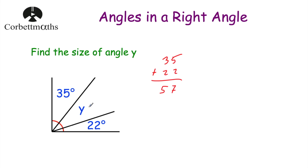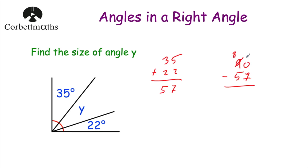So if we take 57 away from 90 that'll tell us what's left for y. 0 take away 7 we can't do, so let's borrow. Cross off the 9, call it an 8, and this is now 10. 10 take away 7 is 3, and 8 take away 5 is 3. So that means y is 33 degrees.